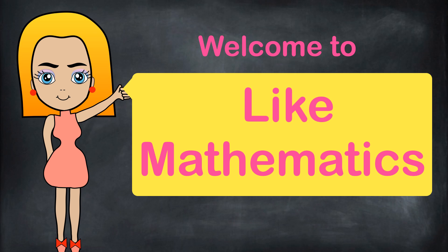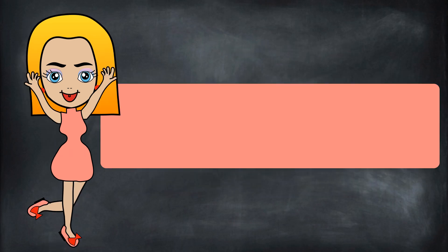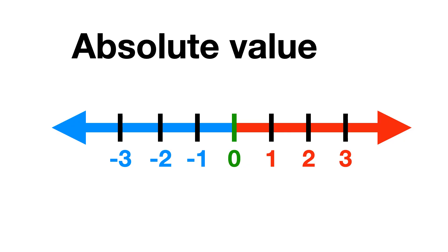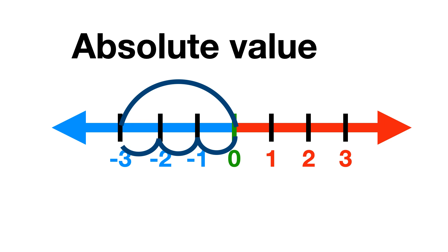Welcome to Like Mathematics. Today we are going to learn about absolute values. You notice all the numbers are at a specific distance from 0. The distance from 0 to minus 3 is 3, and the distance from 0 to positive 3 is also 3.